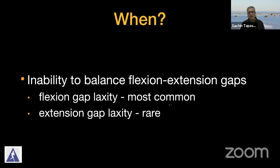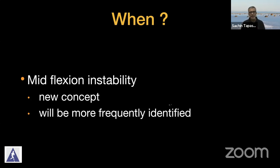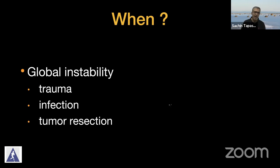When should we do it? There are three main indications. First, when you're not able to balance your flexion and extension gap — usually the flexion gap is the problem. Second, mid-flexion instability, which is a well-recognized concept, and with increasing number of knee replacements, we will start identifying more patients who are unhappy because they have mid-flexion instability. Lastly, global instability especially following trauma, infections, or tumor resection that has seriously compromised the insertion points of your collateral ligaments.